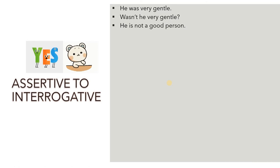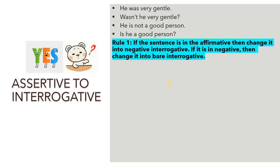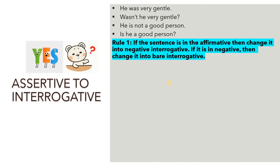'He is not a good person' becomes 'Is he a good person?' Note the change of auxiliary. If a sentence is affirmative, change it into negative interrogative. If it is negative, change it into bare interrogative. So affirmative becomes negative interrogative, and negative becomes plain interrogative — just the opposite way.